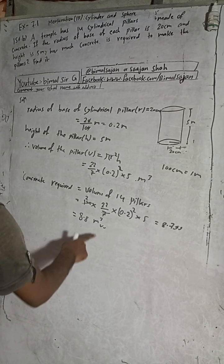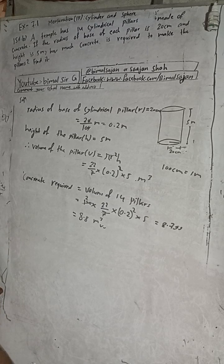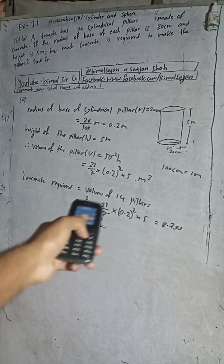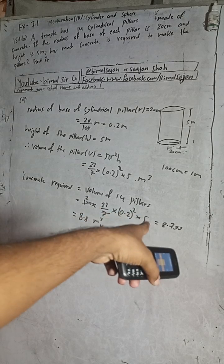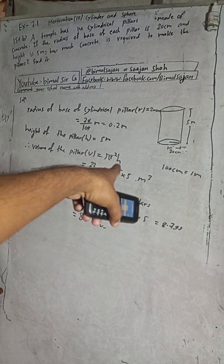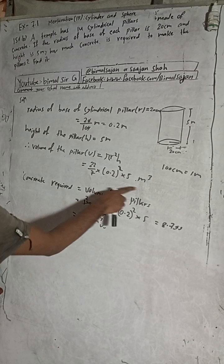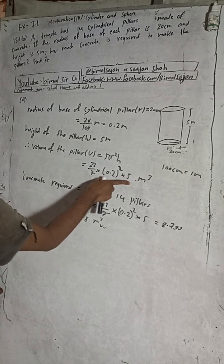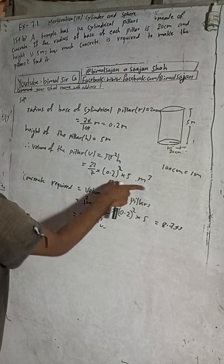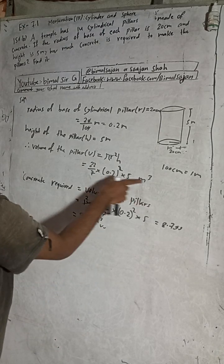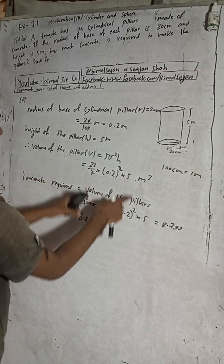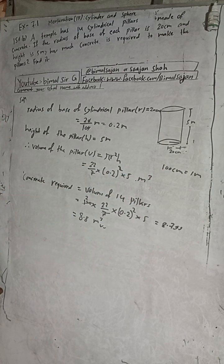The concrete required is 8.8 metres cubed. That is how much concrete is required to construct the 14 pillars. This is the required solution, dear students.